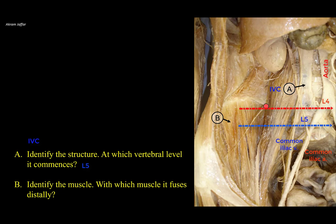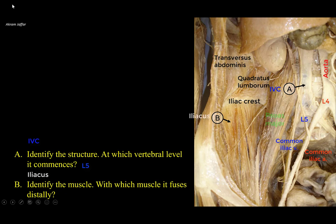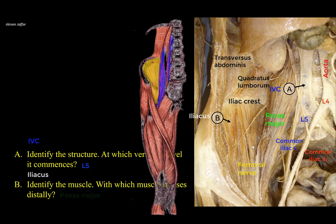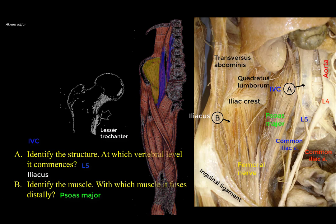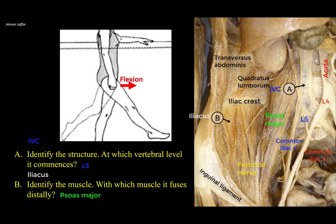Regarding muscle B, note that it is located below the iliac crest. Above the iliac crest you have quadratus lumborum and transversus abdominis; below the iliac crest is the iliac fossa, occupied by the iliacus muscle, lateral to the psoas major. You can see that in the groove between them is the femoral nerve. Inferiorly, the iliacus joins with the psoas major muscle, and their tendon attaches to the lesser trochanter of the femur. As a combined muscle they are referred to as the iliopsoas, passing beneath the inguinal ligament. Both flex the thigh at the hip joint and are strong flexors.